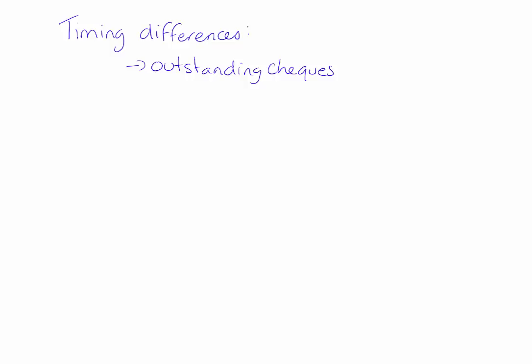Another timing difference would be a deposit. When the company receives a check at their office, they'll record it as being received into their bank account. The company then brings the check to the bank to get deposited, but if it's after hours or late in the day, the bank might not get around to depositing that check into the customer's account for a day. In that case, there's going to be a timing difference between when we record the check in our books and when the bank records it on our bank statement.